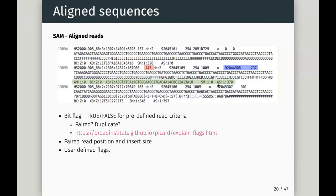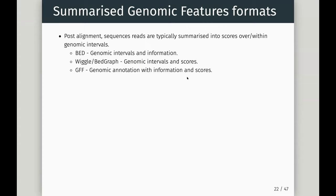FASTQ and SAM formats summarize our sequencing data and how it aligns to the genome, but they are big files — they contain all the sequence, all the quality, and SAM adds all the alignment information on top. Post-alignment, we often want to summarize things like the number of reads or the amount of signal over a particular position in the genome. These summarized files are much easier to work with because they've already extracted the information we need.